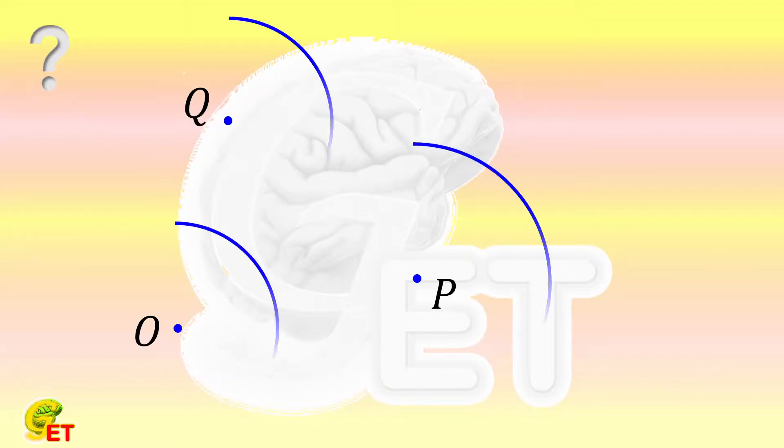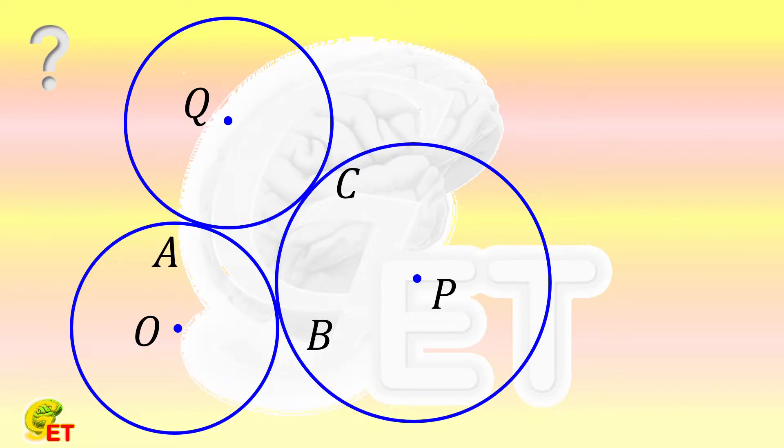Three circles O, P, and Q are tangent to each other, and the three tangent points are A, B, and C, respectively.